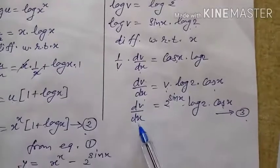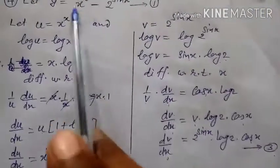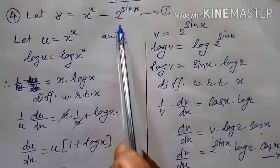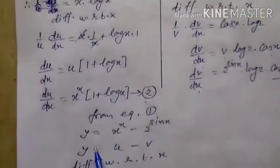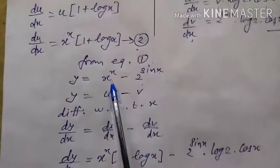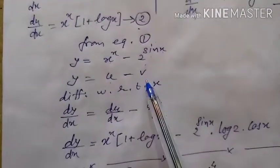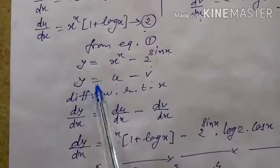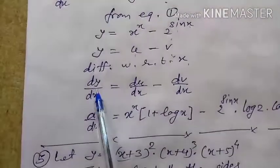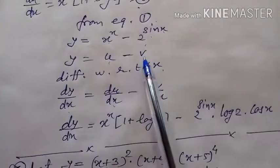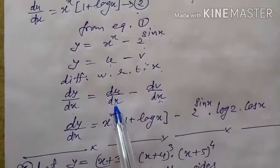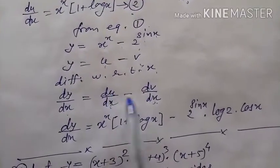This is the value of dv/dx. Now from equation number 1, y = x^x - 2^(sin x). Since we supposed the first term is u and the second term is v, it becomes y = u - v. Differentiating with respect to x: dy/dx = du/dx - dv/dx. Now substituting from equations 2 and 3.